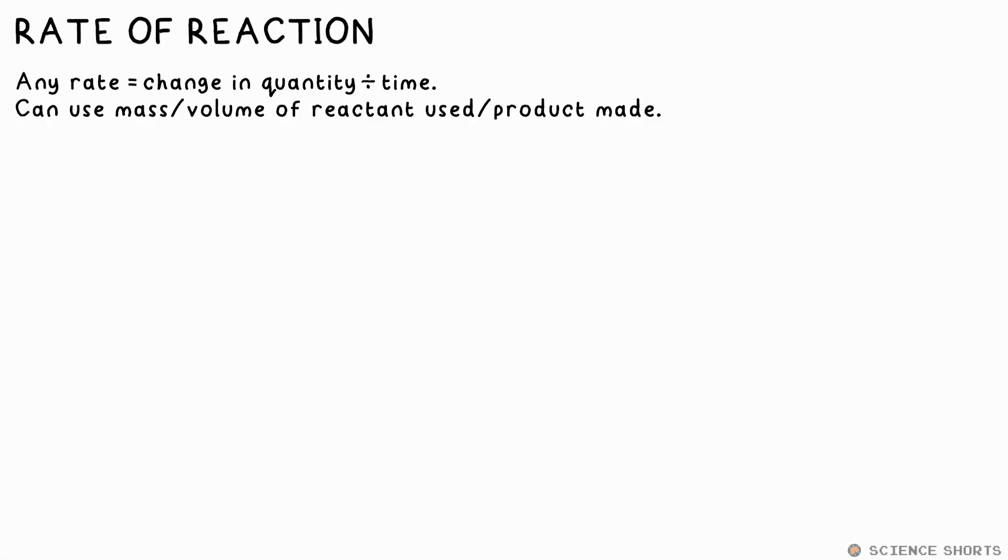How fast a reaction happens is called the rate of reaction. Any rate is a change in a quantity divided by time. In chemistry's case, that could be the quantity of reactant used or product formed, or the effect that these have.